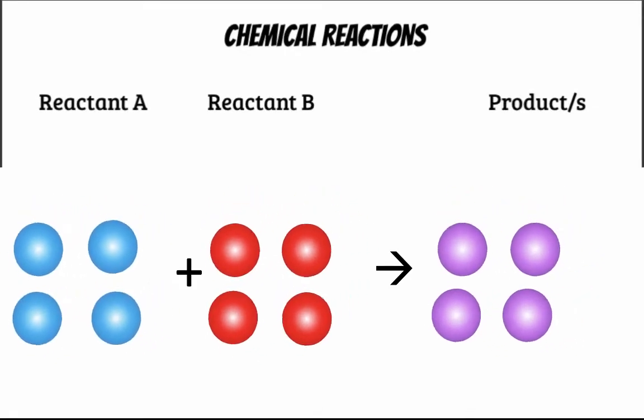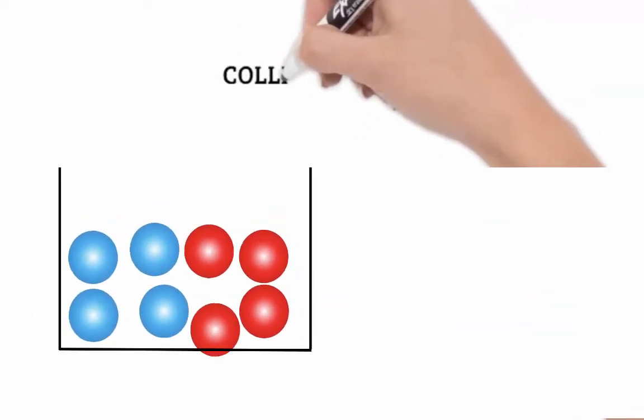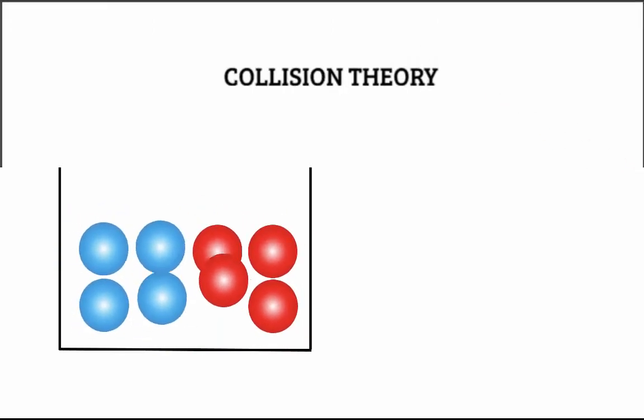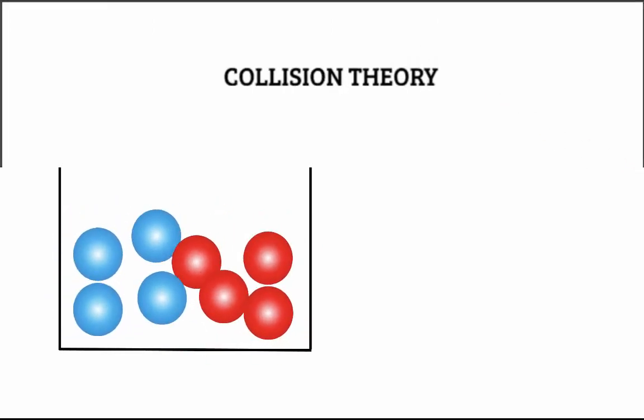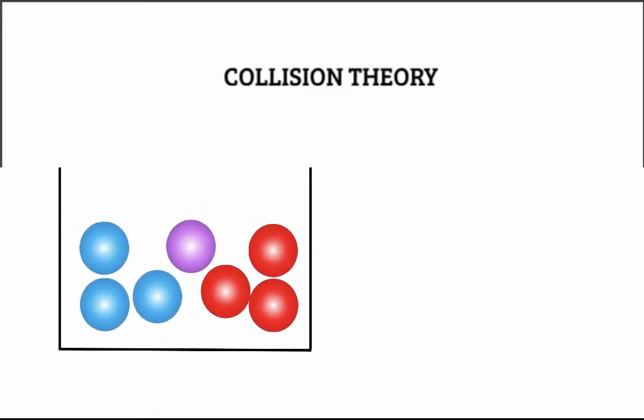In order for a chemical reaction to occur, particles must collide. We call this collision theory. If two particles collide with enough energy, the bonds will break and atoms will be open to form new bonds with other atoms, therefore creating the new substance.